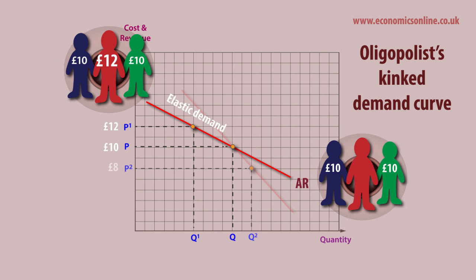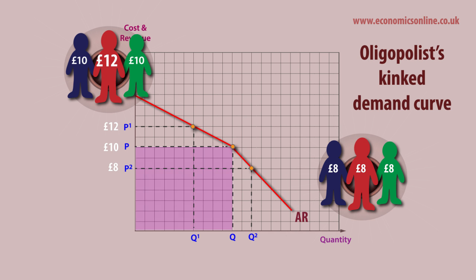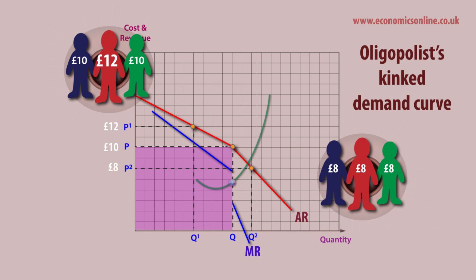Demand is relatively elastic above the kink. Lowering price may lead to retaliation as rivals are forced to drop their price to maintain their market share — in this case demand is relatively price inelastic. Revenue is maximized at P, and profits are also maximized at P, where marginal cost equals marginal revenue.